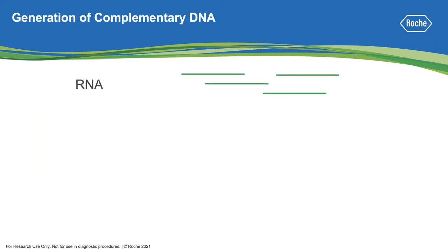To prepare RNA for sequencing, it must first be converted into double-stranded DNA molecules that can serve as a template for DNA polymerases during NGS library preparation. These DNA copies are called complementary DNA, or cDNA.